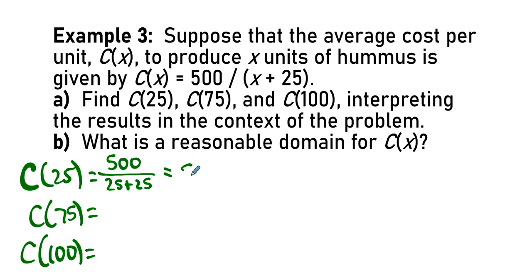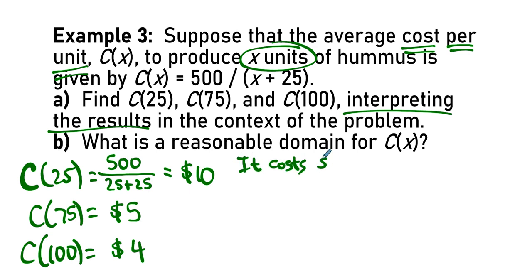Find what 500 divided by 25 plus 25 is, and similarly for the others. 500 divided by 50, that's 10. 500 divided by 100 is 5. And 500 divided by 125 is 4. Let's interpret the results. It was an average cost per unit, where X is the number of units. So, in this case, the number of units is 25, and the cost per unit is 10.